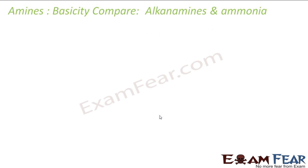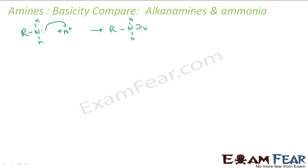We will see this when we compare alkylamines and ammonia. As I already mentioned, ammonia is not that basic — alkylamines are more basic than ammonia. Let's compare them. Let's take the alkanamine R-NH2 with a lone pair, and suppose there is H+ here. Since it's basic, it will attack this H+, and the output you get is R-NH2H with a positive charge. Let's do the same for ammonia — ammonia attacks H+, and since ammonia also has a lone pair, it will attack to give N with a positive charge.